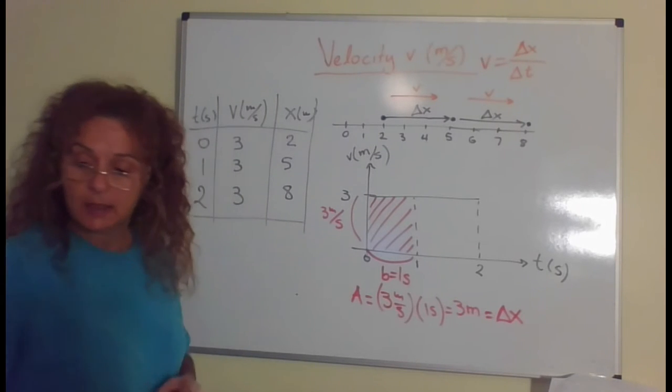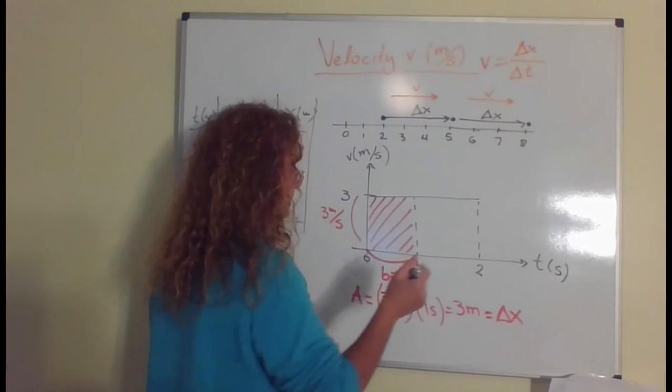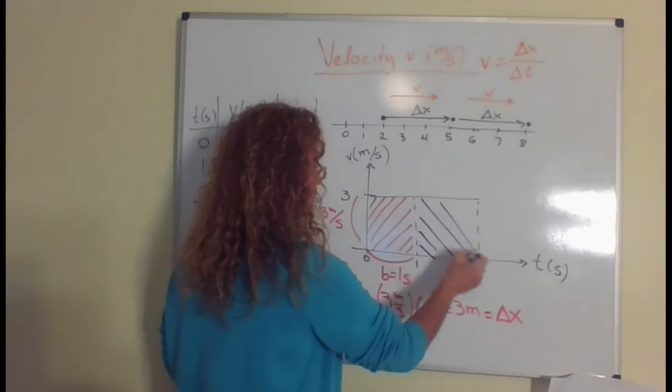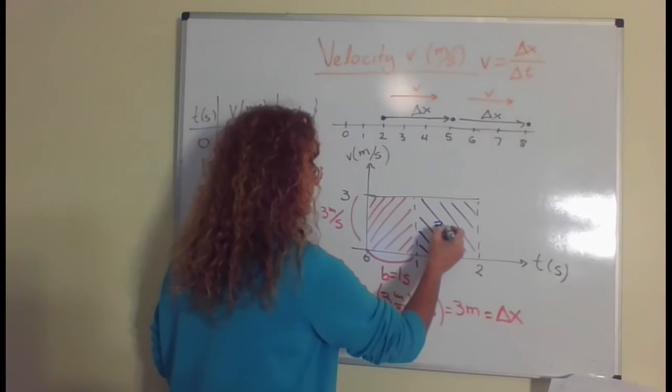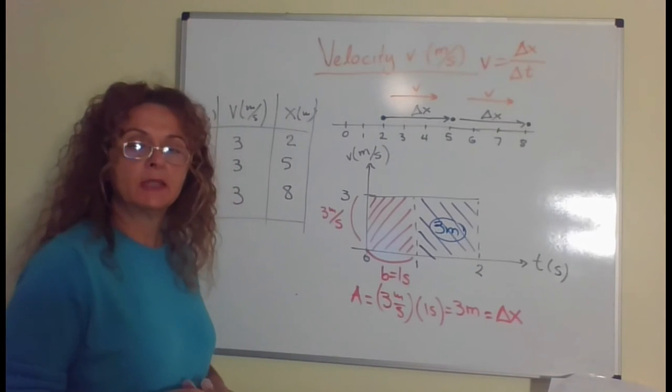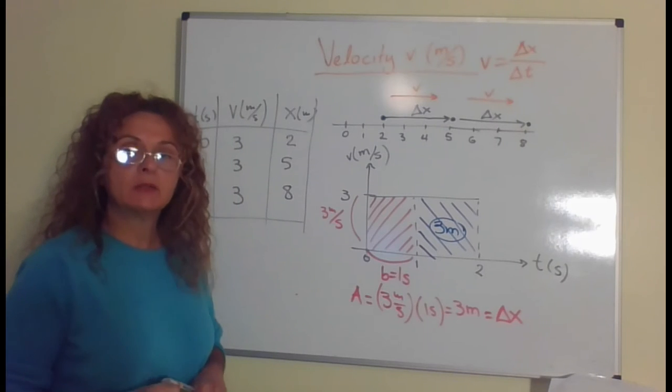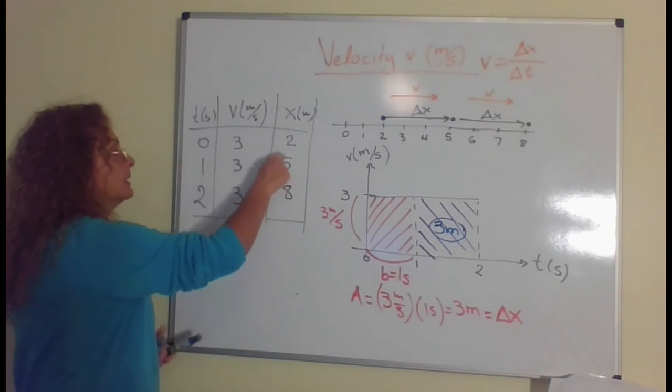If I find the area under the graph for the next second, I will find the displacement for that second, which is another 3 meters. And of course, if I decided to find the displacement for the first 2 seconds, I would find a total of 6 meters. So I see that the area under the graph gives me the displacement.